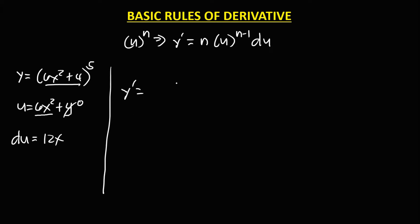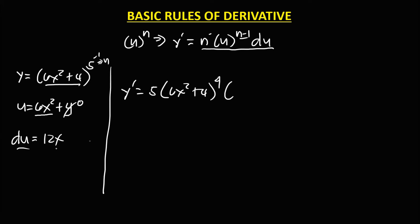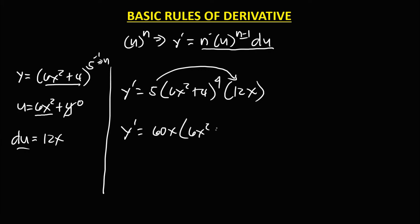To find the full derivative: u is 6x squared plus 4, n minus 1 is 5 minus 1 equals 4, times the derivative of u which is 12x. Simplifying: 5 times 12 gives 60x, so y prime equals 60x times 6x squared plus 4 to the power 4. This is the derivative.